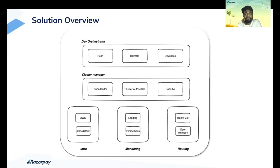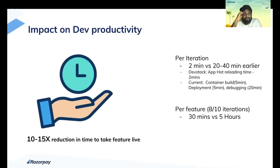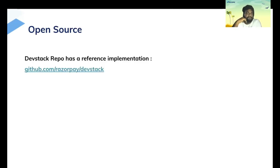This is how the solution looks from the angle of tools, with different components: dev orchestrator, cluster manager, infra monitoring, and routing. This diagram explains how pre and post DevStack will look — a sequential development workflow replaced by multiple parallel ecosystems working with local sync. The impact on developer productivity: we have seen a 10 to 15x reduction in time to take a feature live, from five hours down to 30 minutes per feature. Per iteration, it has come down to two minutes from 20 to 30 minutes earlier. Given our emphasis on open source, we are recording all details and a reference implementation in an open-source repo — feel free to raise issues or contribute.